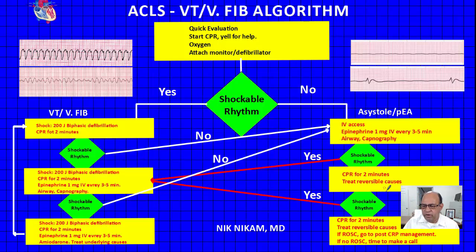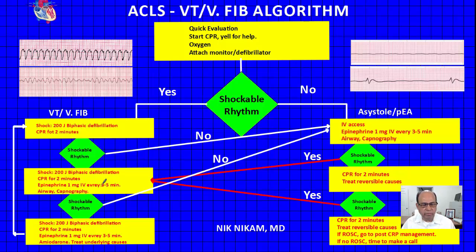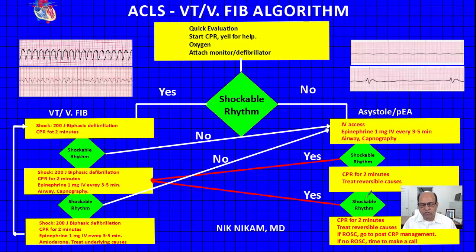If the rhythm is still asystole or agonal, we continue CPR, look for reversible causes, and recheck the monitor two minutes later. If VFib or VTach returns, we go back to the VT/VFib algorithm with shocks, CPR, epinephrine, and amiodarone. If the patient remains in asystole or agonal rhythm after multiple attempts, we evaluate for reversible causes. If there is spontaneous return of circulation, we proceed to post-CPR management. However, after 30 to 40 minutes of high-performance CPR without a rhythm that can sustain blood pressure, it may be time to call it.